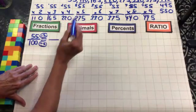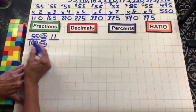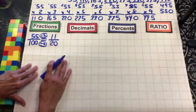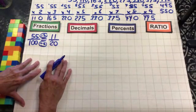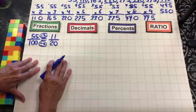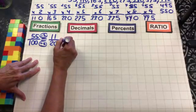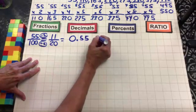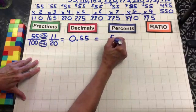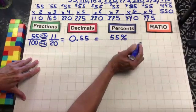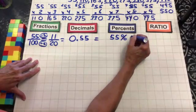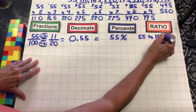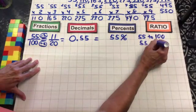Five goes into 55 eleven times, and five goes into 100 twenty times, so we get an equivalent fraction of 11 twentieths. Going back to our original, the decimal is 0.55 hundredths, which is of course 55%, and our ratio would be 55 to 100, or 55 colon 100.